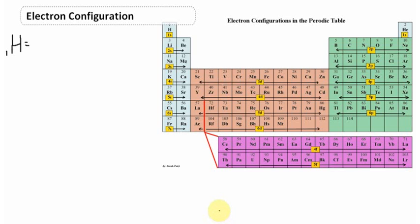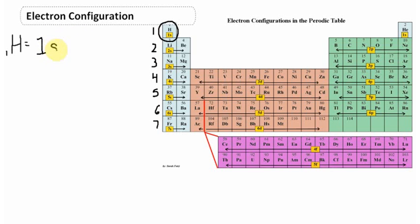The first element we're going to look at is hydrogen, right here. I'm also going to write in a couple of energy levels that are going to be useful to us. Hydrogen's electrons are located on the first energy level, and on the first energy level the electrons are located in an s orbital. Hydrogen has one proton, so it also has one electron. Hydrogen's electron configuration is simply 1s1.